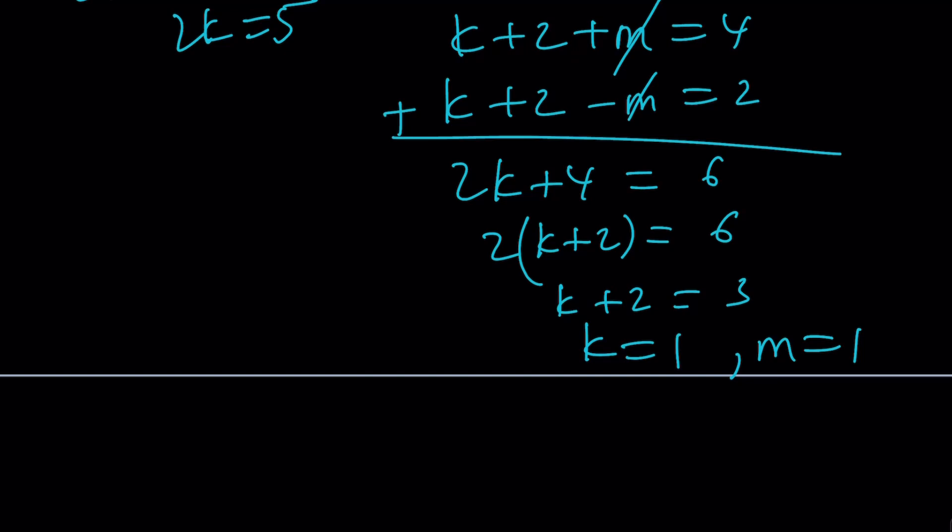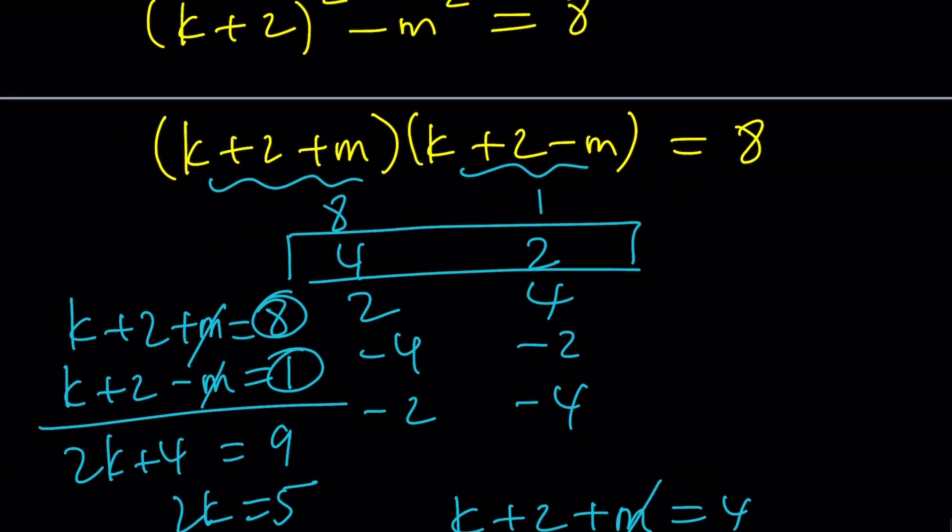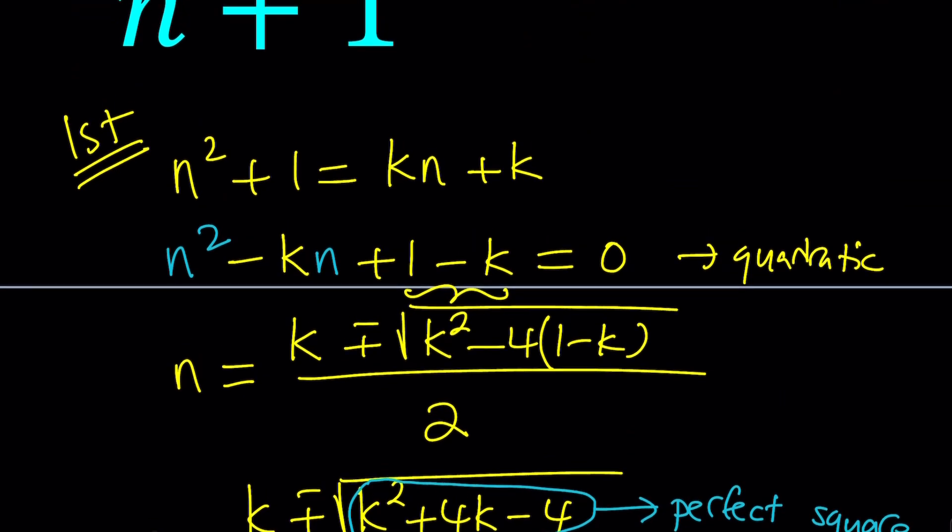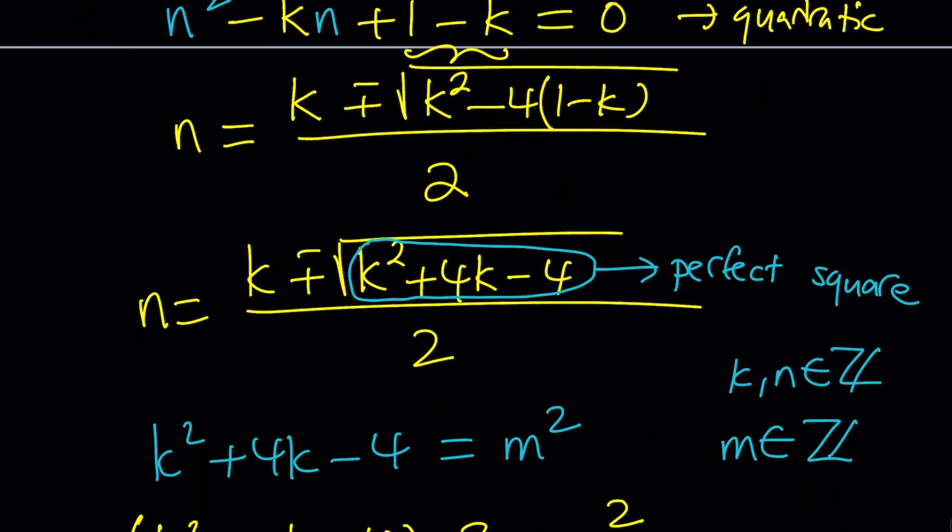And that doesn't mean the solutions are 1, 1, because remember we're looking for something else. What are we looking for? n and k. So m is not that important, but we still need it. And we need to find n. So how do you find n when this is a perfect square? That's another question.